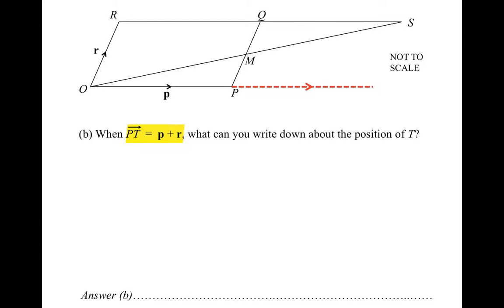and if you do an R, you end up up there. So in other words, you end up at point S. The position of point T is in the same position as point S.